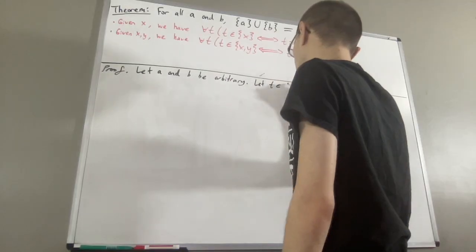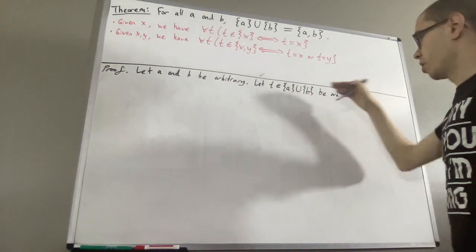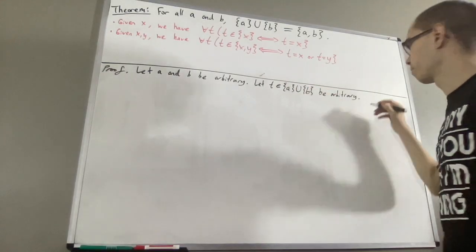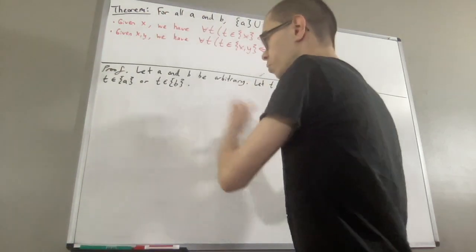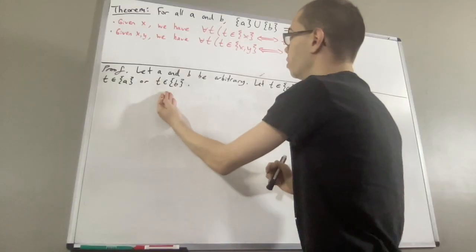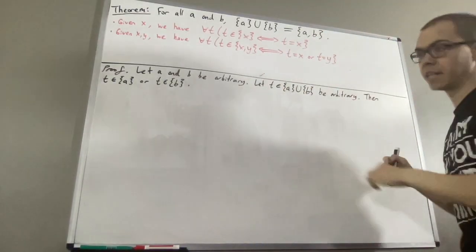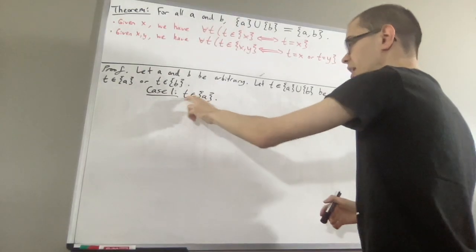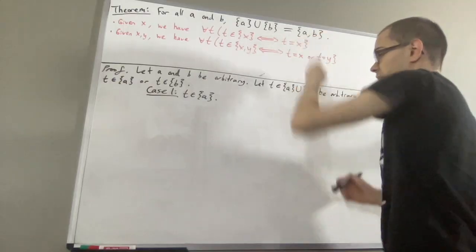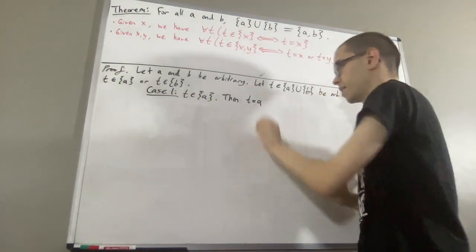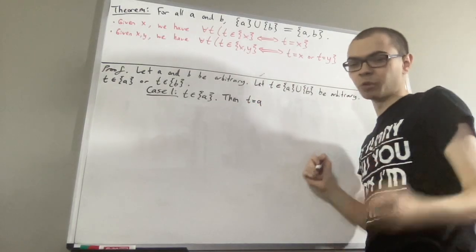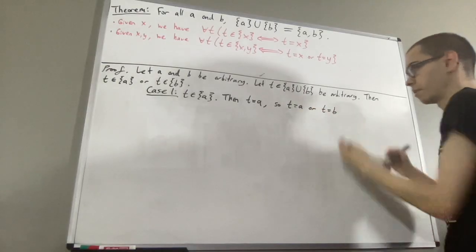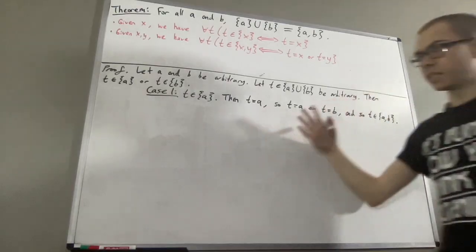I'll call it T. Well then, the definition of union tells us that T is an element of the singleton set of A, or T is an element of the singleton set of B. We are going to split this up into two cases, and in either case we are going to show that T is an element of the pairset of A and B. Let's first consider the case that T is an element of the singleton set of A. By the property that singleton sets satisfy, this tells us that T is equal to A. And since T is equal to A, that implies T is equal to A or T is equal to B. But then, by the property that pairsets satisfy, this tells us that T is an element of the pairset of A and B. This completes case one.